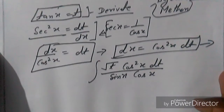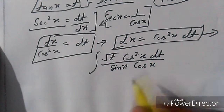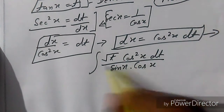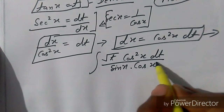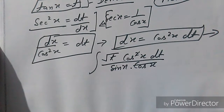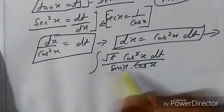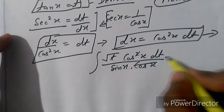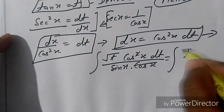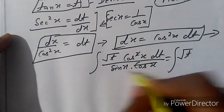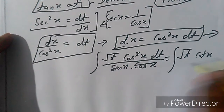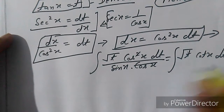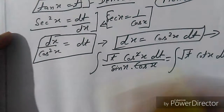We now simplify this expression. We see cos²(x) in the numerator and cos(x) in the denominator, so we cancel one power of cos(x). This leaves cos(x)/sin(x), which equals cot(x), times dt.